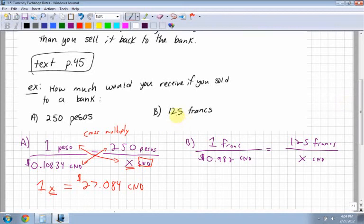Next example. What if you had 125 francs and you're selling this to the bank? Again, I set up the equation where francs are on top, Canadian dollars are on the bottom, and I cross multiply. So I have one franc is equal to 0.982 Canadian dollars, so a lot more than a peso. This is really important too when you're looking at these types of questions to see how much their money is worth in other countries.